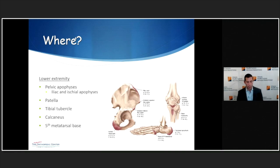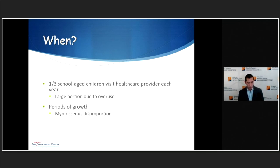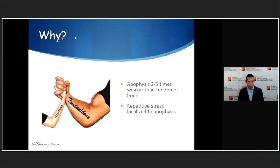You can see apophysitis throughout the pelvis, at the tibial tubercle, the calcaneus, or the base of the fifth metatarsal. About one-third of all school-age children visit their healthcare provider each year for a musculoskeletal issue, and a large portion are due to overuse. We typically see these during periods of growth because bones grow and tendons and muscles get pulled along, creating a myo-osseous disproportion. The apophysis is about two to five times weaker than the tendon or bone, so repetitive stress is absorbed there.